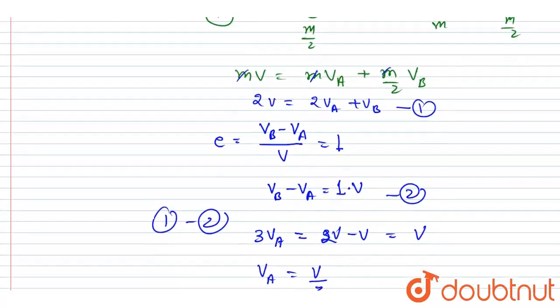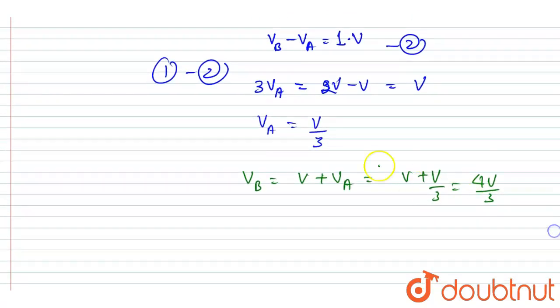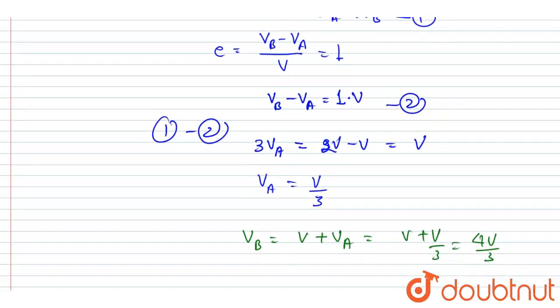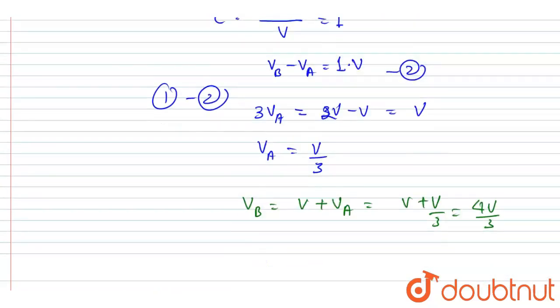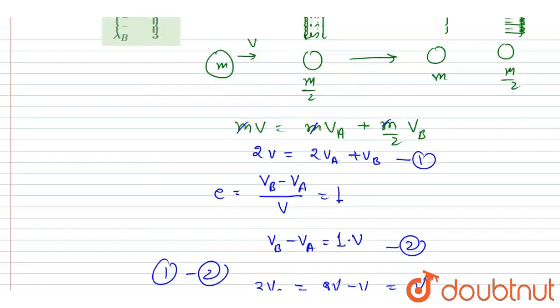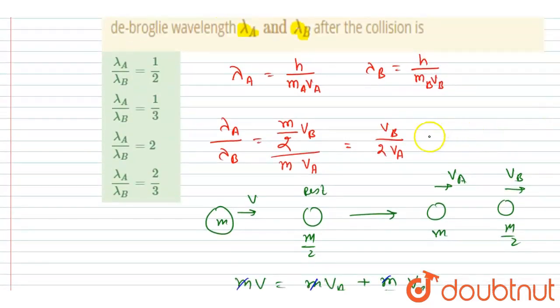So we got 4v/3 as the velocity of B and v/3 as the velocity of A. So just put the value of vA and vB in this equation. So vB is 4v/3 and vA is v/3. So just put the value.